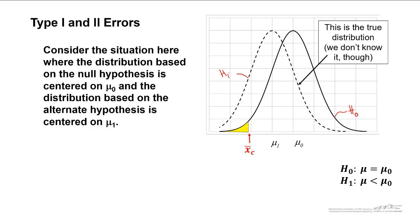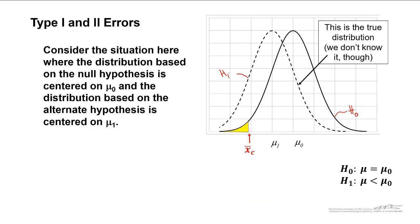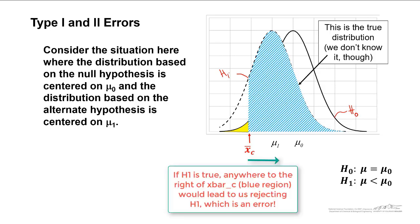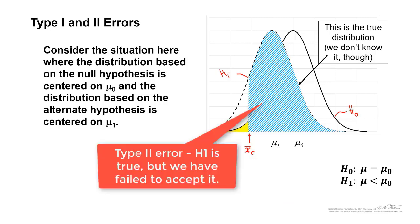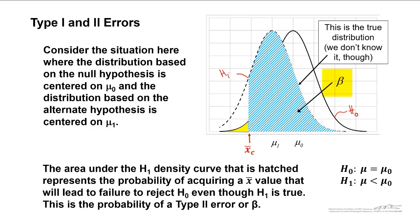If the true distribution is H1, the dotted distribution, we would still need to get a sample average less than x bar c in order to accept the alternate hypothesis. If H1 is true and we got an x bar to the right of x bar c, that corresponds to this blue region — this is a type 2 error. The alternate hypothesis is true but we have failed to accept the alternate. Anything to the right of x bar c underneath the true alternate hypothesis distribution is beta — the probability of making a type 2 error.